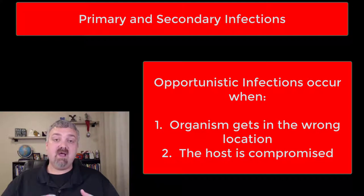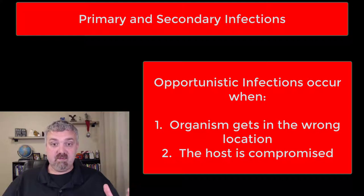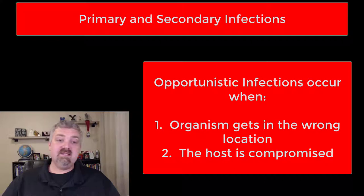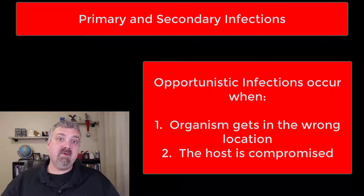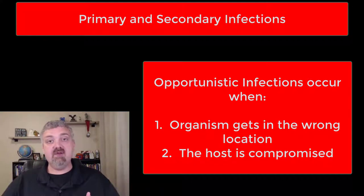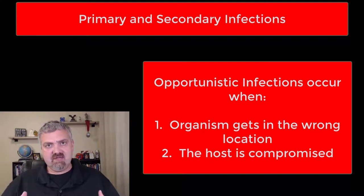In this context, we're primarily talking about compromised hosts. The primary infection compromises you and your immune system, which allows the secondary infection to take hold. A good example would be the flu and then secondary bacterial infections. The flu damages your respiratory epithelial cells, releases chemicals into the environment, and impairs your immune system — allowing bacteria like Streptococcus pneumoniae to come in and cause a secondary infection.